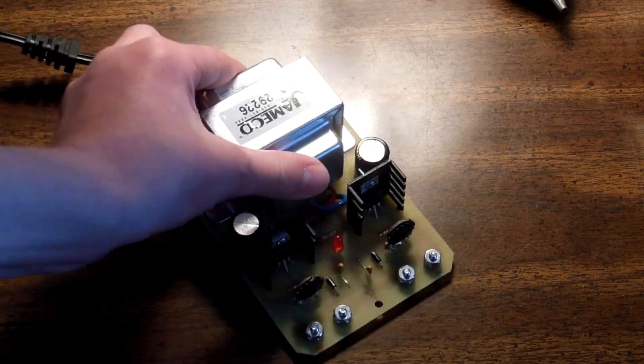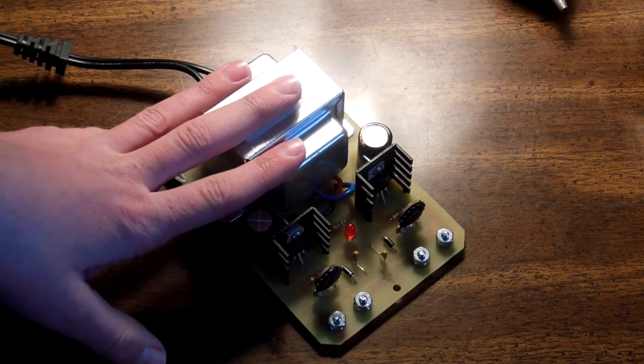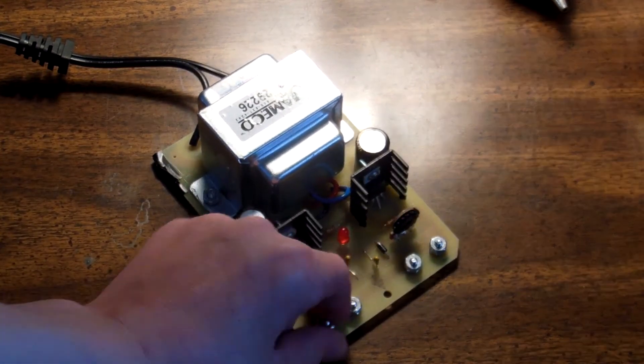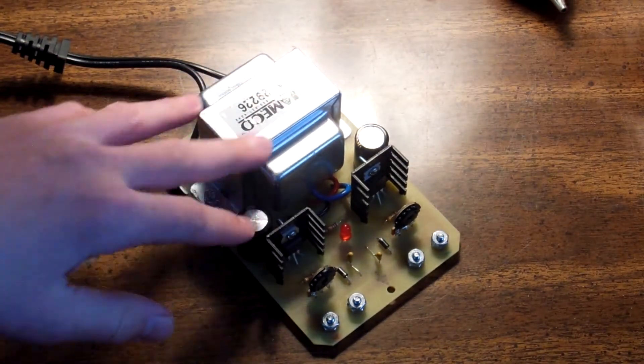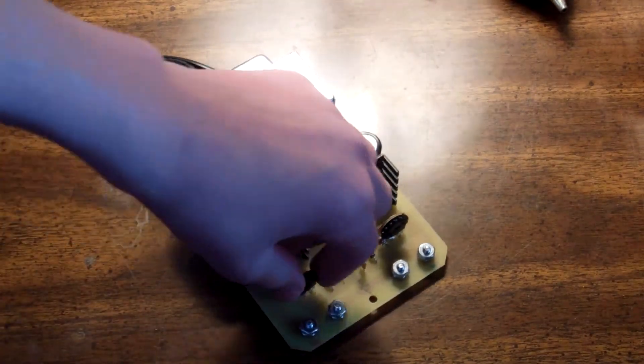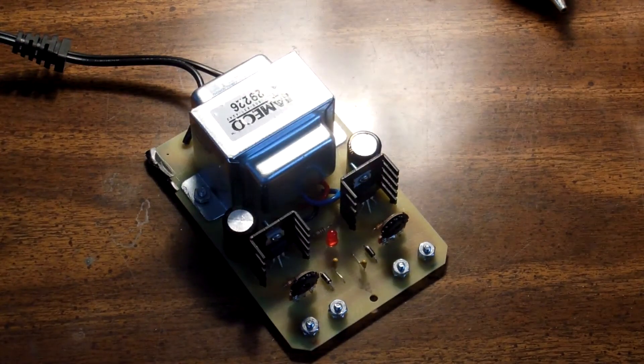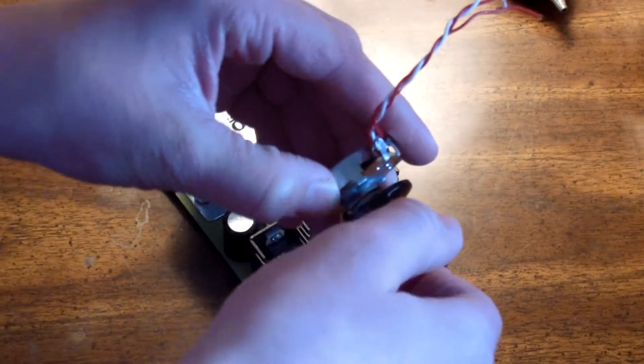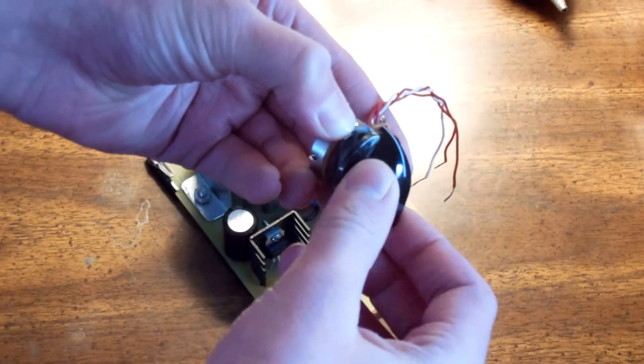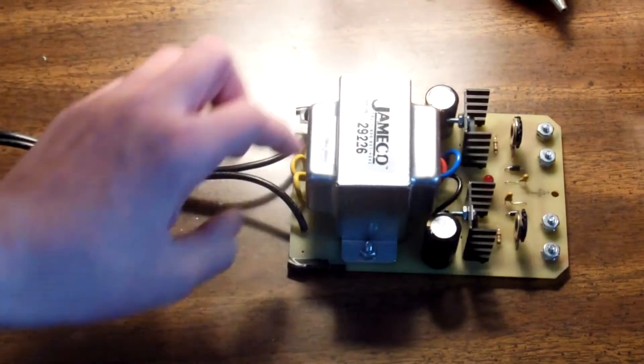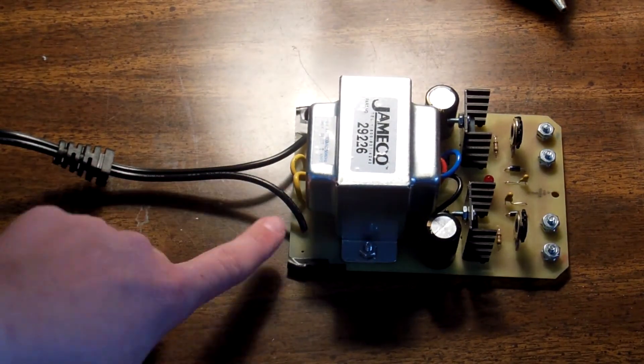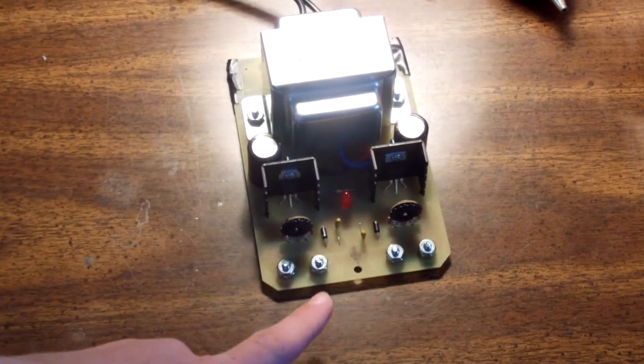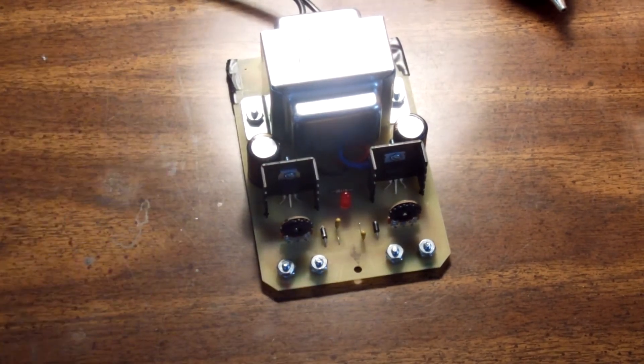So the next step for this kit would be to put it into a nice enclosure. You would replace these binding posts, just these little bolts. You would replace them with real binding posts, and you would also replace these trim potentiometers with real potentiometers like this one. You can put a knob on it, and you can just get more precise control with it. Also, you would put a switch in line with this wire so that from the front you can control the voltage, you can have your outputs, and you can turn it on or off.